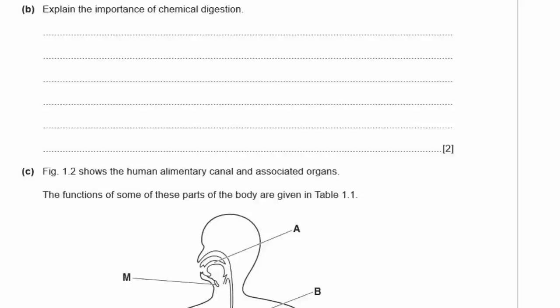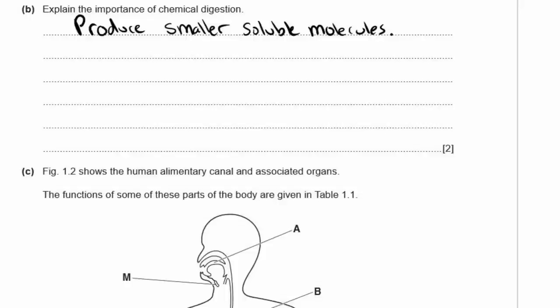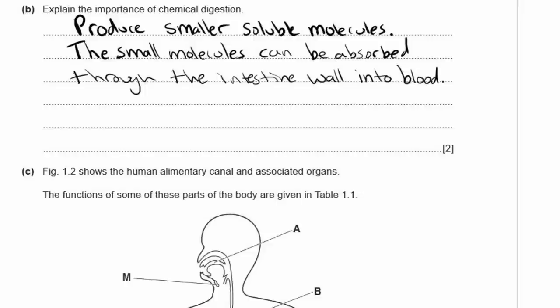Question 1b: explain the importance of chemical digestion. Mechanical digestion involves things like teeth and stomach churning. Chemical digestion produces smaller, soluble molecules — the key word is molecules. These smaller molecules can then be absorbed through the cell membranes of the intestine wall into the blood.